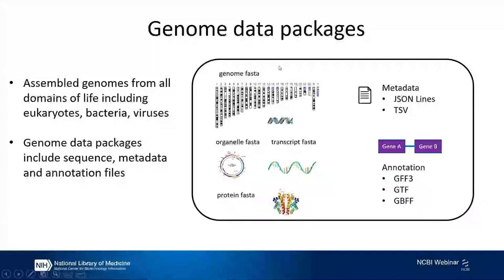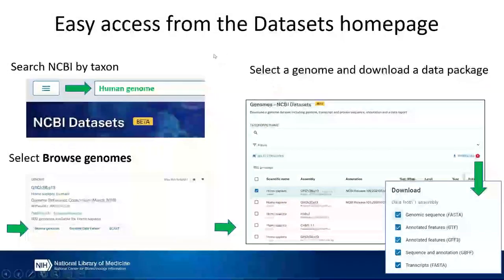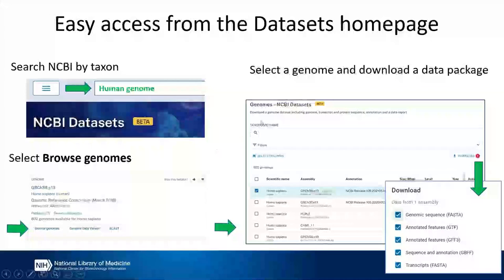A user can come in and ask for something simple like human genome, and they can get options to download a package of data that includes all these diverse data types. Right now you can get assembled genomes for all domains of life through Datasets — eukaryotes, bacteria, and viruses. Through the web interface, you go to the Datasets homepage, type in 'human genome' or even just 'primates,' and you'll get a box that tells you what the reference genome is with a Browse Genomes button. Clicking that takes you to the genome page, which has a table of all genomes for that requested organism, sorted with the reference genome at the top. You select the genome you want, hit the download button, choose your file types, and download.